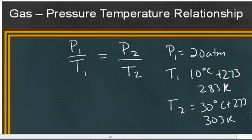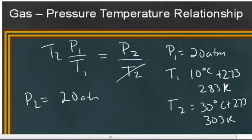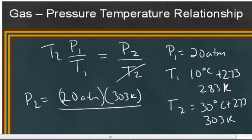So plugging these initial and final conditions in and solving for P2, we have P2 is equal to P1, which is 20 atmospheres, times T2, which is 303 Kelvin, divided by T1, which is 283 Kelvin.